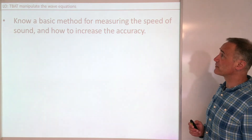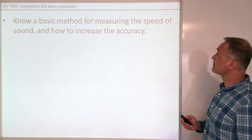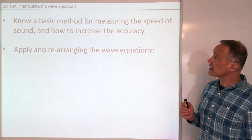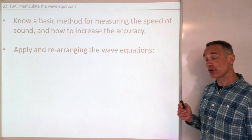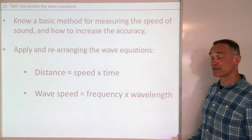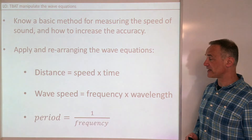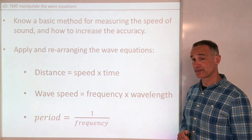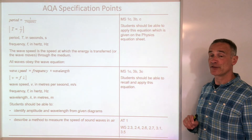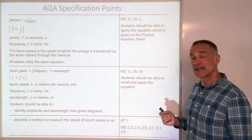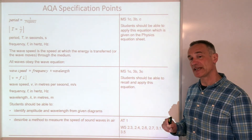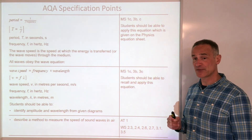So let's just recap. We've looked at how to measure the speed of sound using a basic method and how to increase accuracy. We've looked at applying and rearranging the three wave equations: distance is speed times time; wave speed is frequency times wavelength; and period is 1 over frequency. I'll leave you with the AQA specification points we've covered. Next lesson, we're going to look at measuring wave speed using a ripple tank and frequency times wavelength — one of the required practicals.